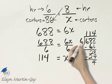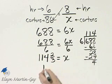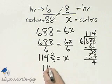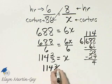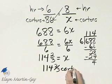4 over 6 simplifies to 2 over 3. So as part of our problem, what does that mean? That means in 8 hours, he can pack 114 and 2 thirds cartons.